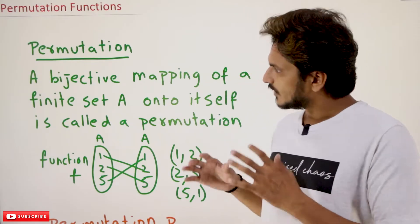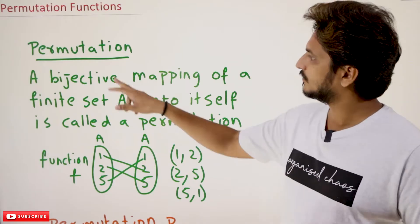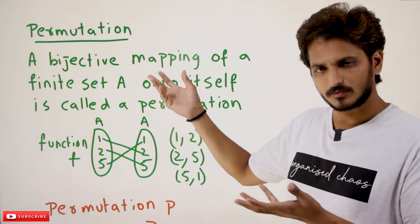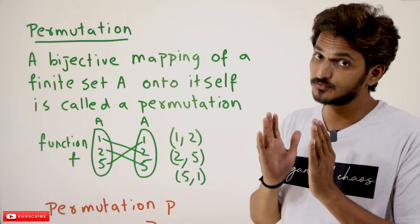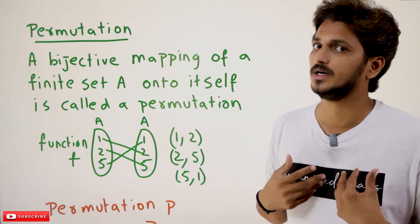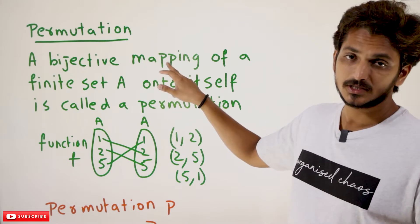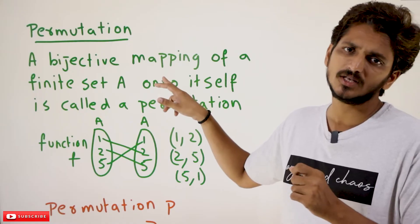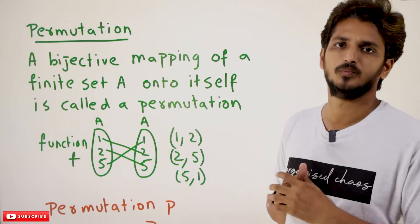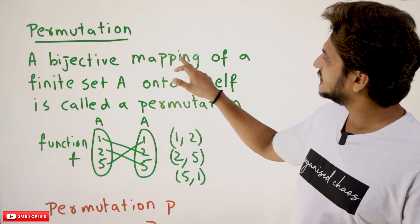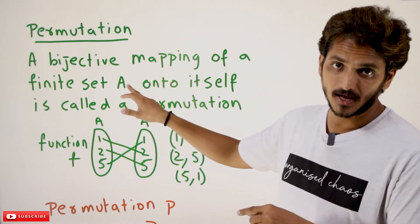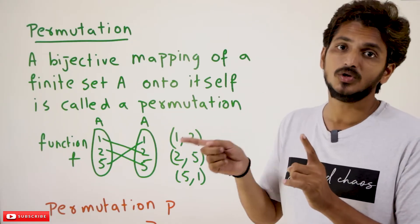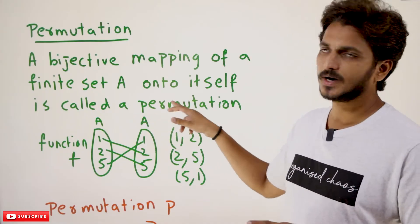Coming to today's class, first we need to understand what permutation means. A permutation is also a function but it satisfies some conditions. A bijective mapping — if it wants to be a permutation, first it should be a bijective mapping. Bijective mapping means it should be one-to-one and it should be onto. So, a bijective mapping of a finite set A onto itself — that mapping from A to A is called a permutation.